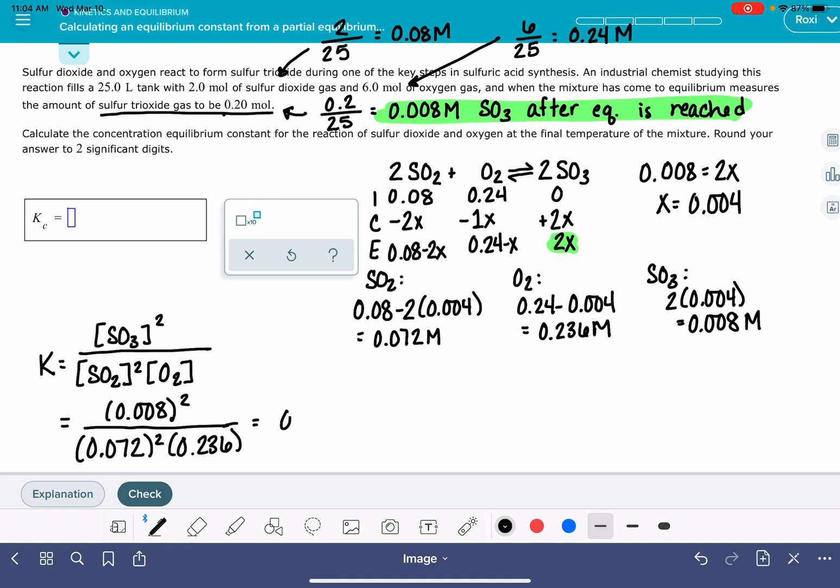Now we just need to solve the math on this. And it is, Alex wants two sig figs, so 0.052.